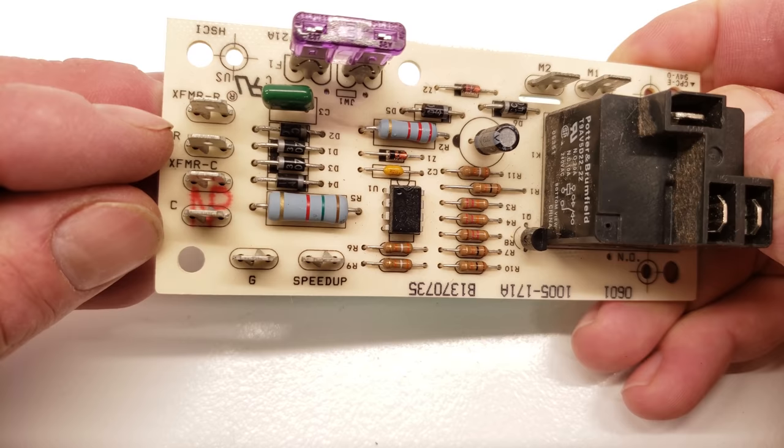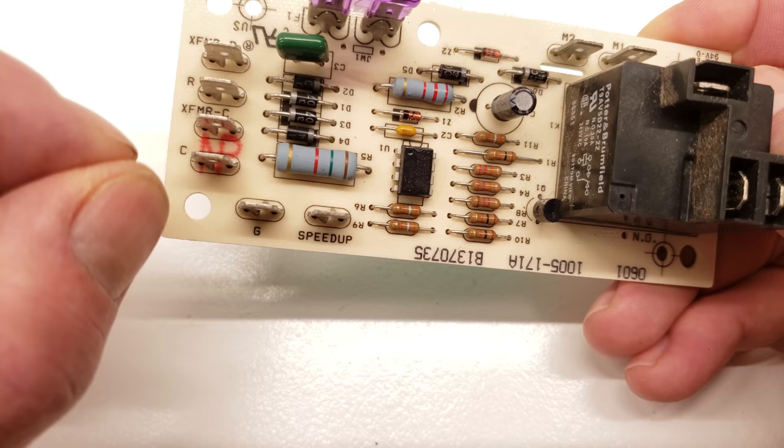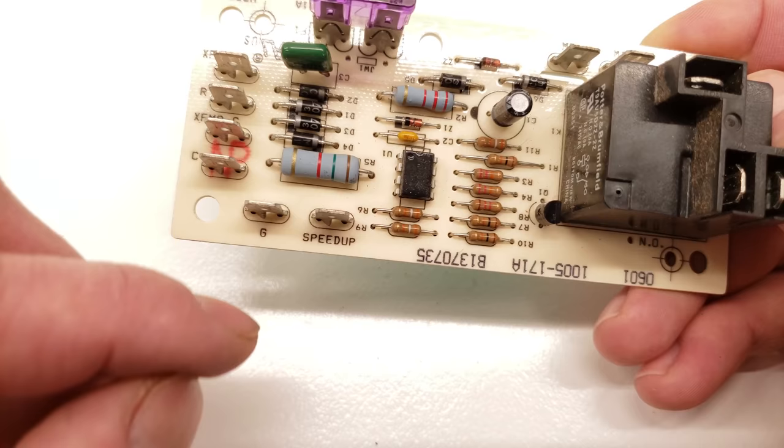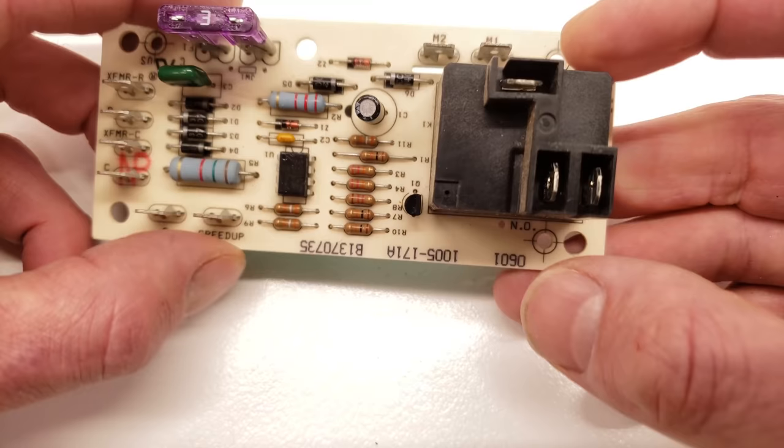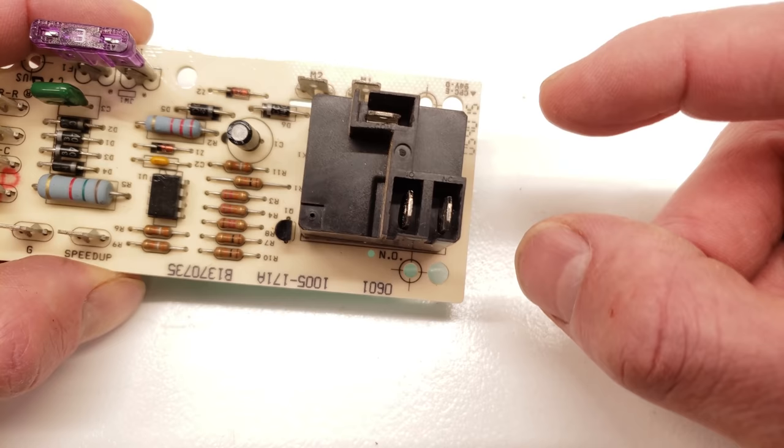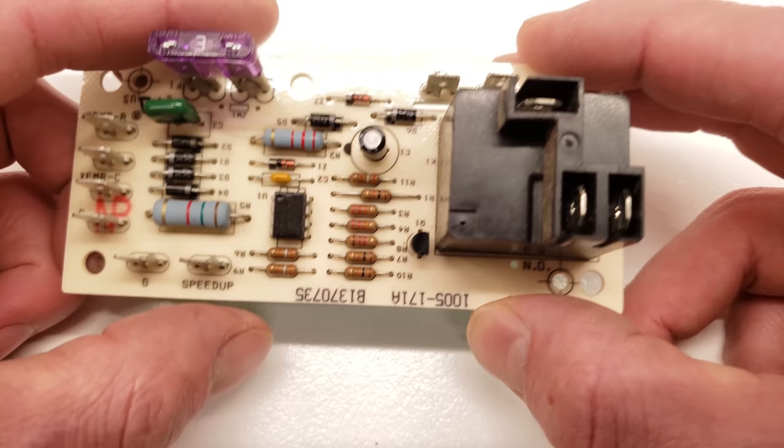In your thermostat, anytime you turn fan on, R and G are going to touch. Where you wouldn't normally have 24 volt power to the board here, you're now going to have 24 volts, and that's going to initiate your relay to close the normally open contacts after about 7 seconds. That's only when you have power to this G terminal.